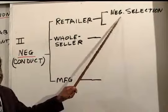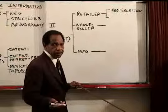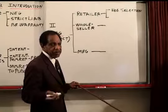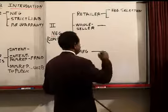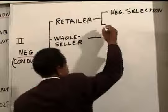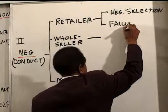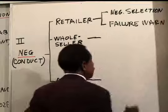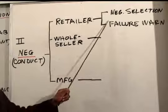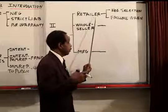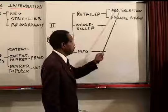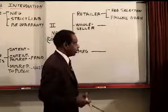The other way the retailer can be negligent is failure to warn — if the retailer already knows the product may be dangerous because someone has been injured by it and they don't warn you about it. When evaluating the retailer's negligence, you use the regular rules: duty (the retailer owed a duty of due care to the purchaser), breach, and then the usual causation — actual and proximate — damages, and defenses.